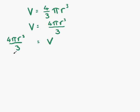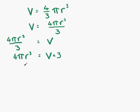The next thing we want to do is to remove the fraction. We have the 3 on the left-hand side dividing; if we move it to the right-hand side, it's going to multiply. So that gives us 4 pi R cubed on the left, V on the right, and 3 changing from divide to multiply. So we have 4 pi R cubed equals 3V.